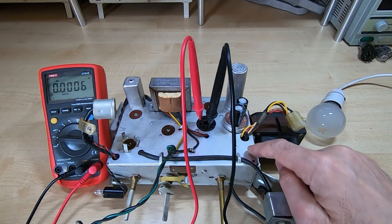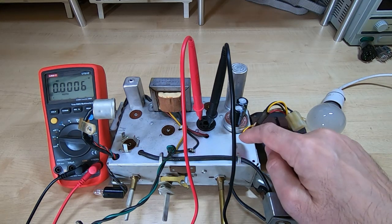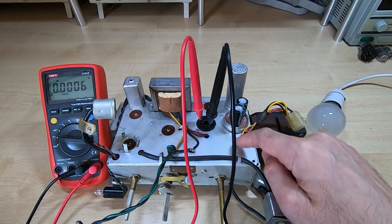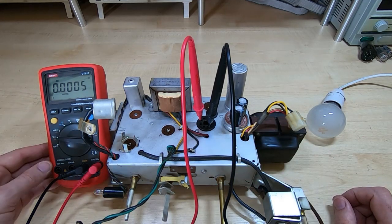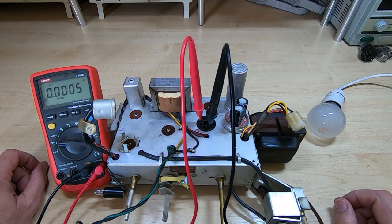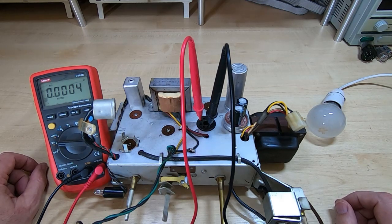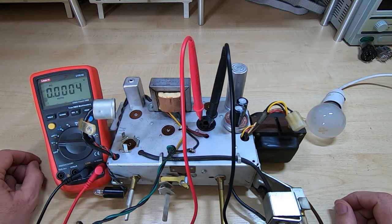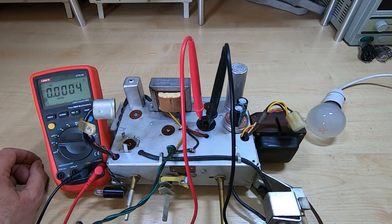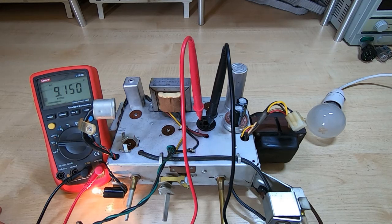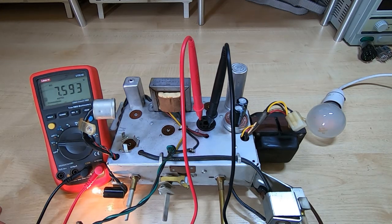So I'll power this up. There'll be no high voltage B plus on the DC rails because the rectifier is not in, but we should see a heater voltage on the meter. So it should be about 6.3 volts. As I say, it'll be quite a bit over that because we don't have any load on the transformer. Okay, so I'll power this up. Okay, we're getting 7.5 volts.